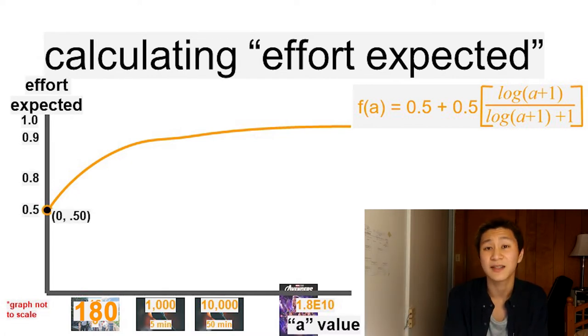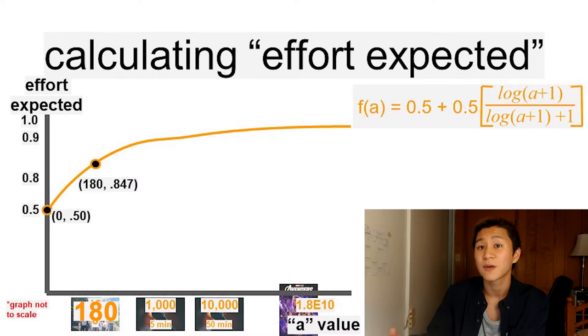Okay, first let's note the y-intercept at 50%, which suggests that when A is close to 0, which represents less-than-a-minute interactions with strangers, this expected effort is really close to 50%. The graph starts to increase, but at a slowing rate of increase. At A equals 180, or a three-hour date, we see that our expected effort is 84.7%.